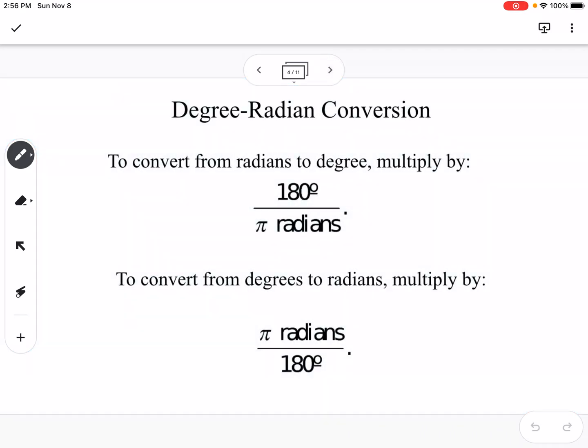So when we're converting between degrees and radians, we use the conversion that there's π radians in 180 degrees. So depending on which way you're converting, you're either going to put the π radians in the numerator or the denominator so that they will cancel, same thing with 180 degrees.